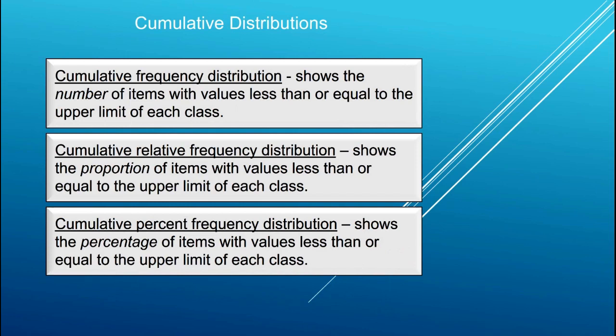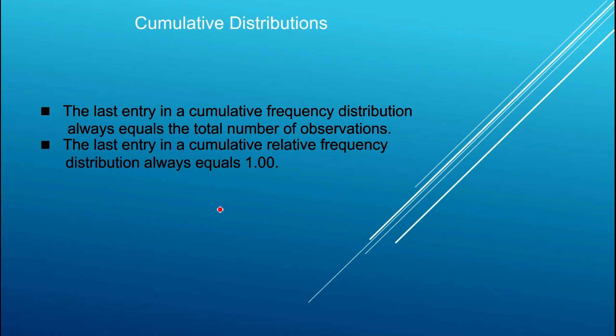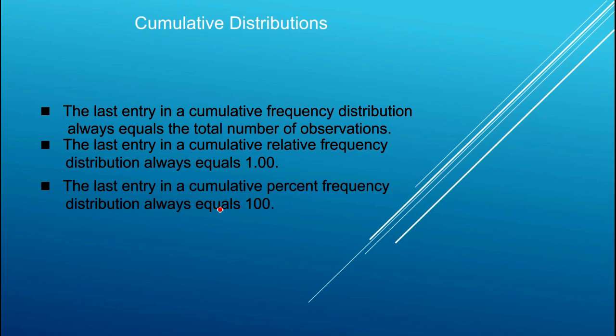We can also calculate cumulative distributions. To calculate a cumulative distribution, we look at the number of items with values less than or equal to the upper limit of each class. Cumulative relative frequency distributions show the proportion of items with values less than or equal to the upper limit. The last entry in a cumulative frequency distribution will always equal the number of observations, the last entry in a cumulative relative frequency distribution will always equal 1, and for cumulative percent frequency it will always equal 100.